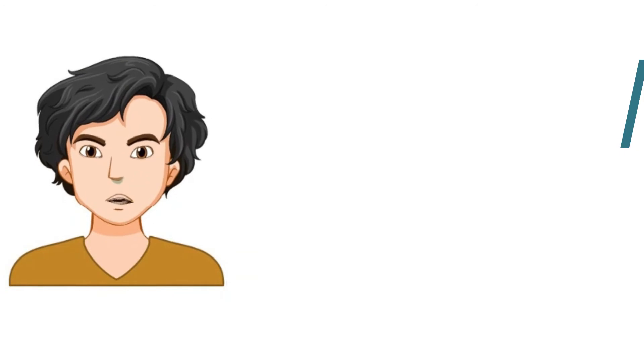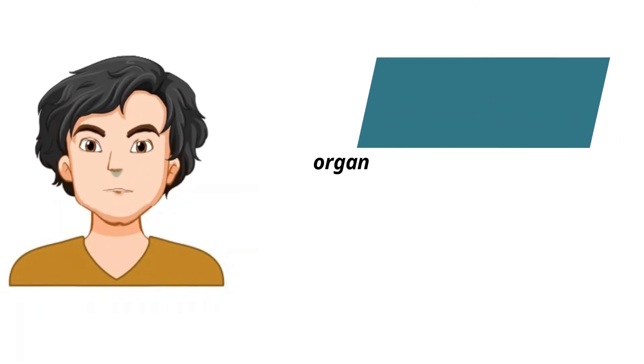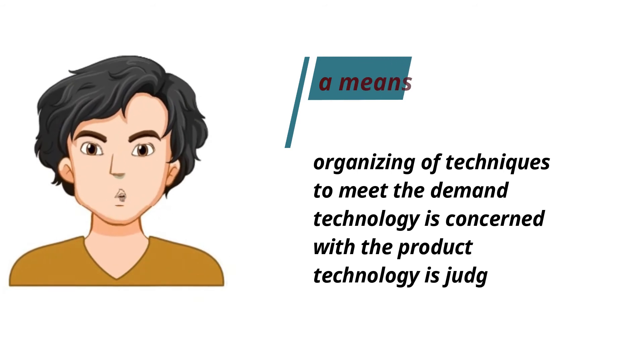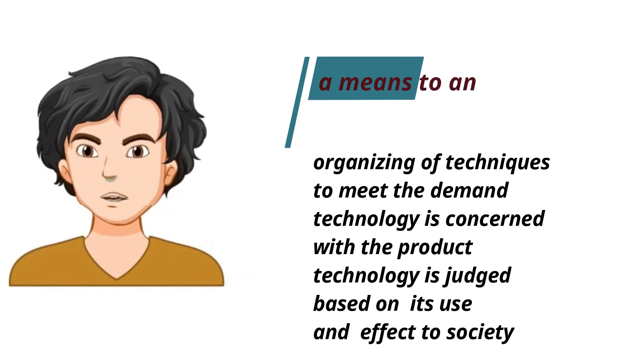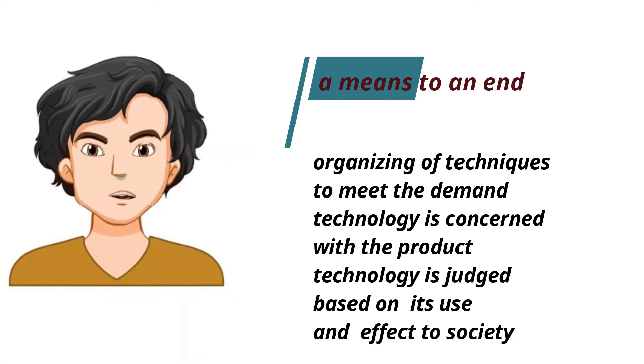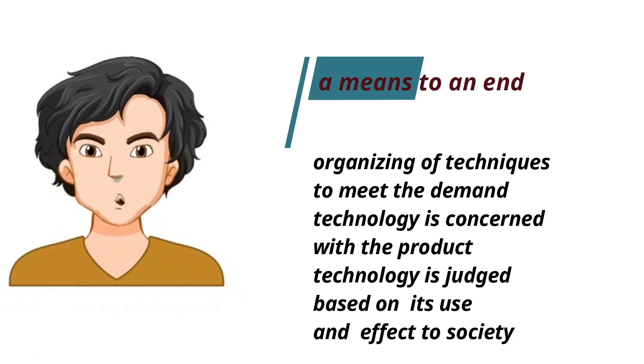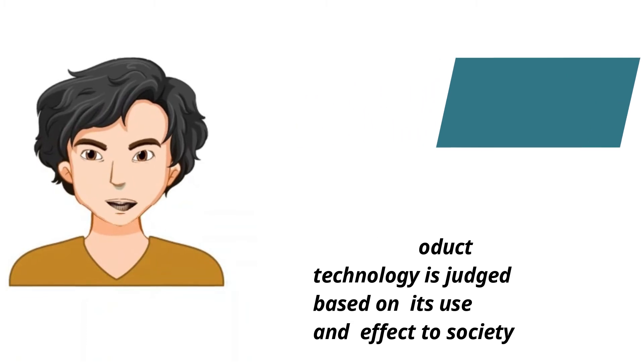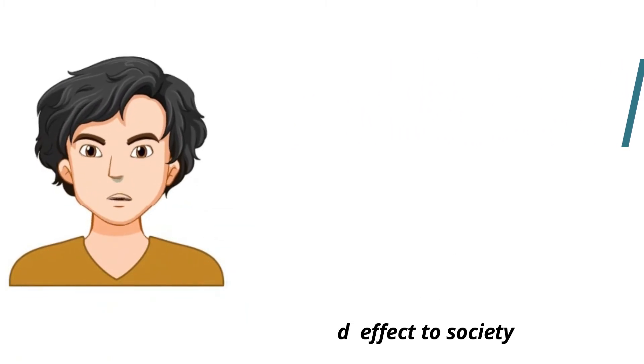Aristotelianism views technology as basically a means to an end. To Aristotle, technology is the organizing of techniques in order to meet the demand that is being posed by humans. This may seem that technology is primarily concerned with the product. Technology will be judged as either good or bad based on the value given to the product, based on its use and effect to the society.